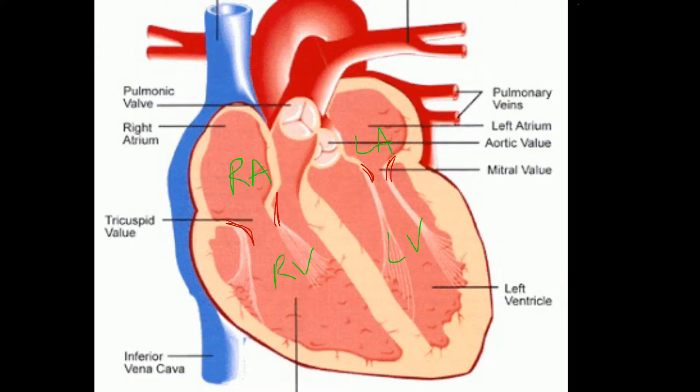On the right-hand side we have the pulmonic valve, and on the left, leading to the aorta, we have the aortic valve.